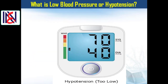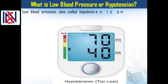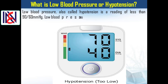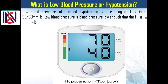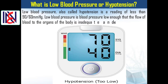Let's start our presentation. What is low blood pressure or hypotension? Low blood pressure, also called hypotension, is a reading of less than 90 over 60 millimeters of mercury. It is blood pressure low enough that the flow of blood to the organs of the body is inadequate, and symptoms and signs of low blood flow develop.